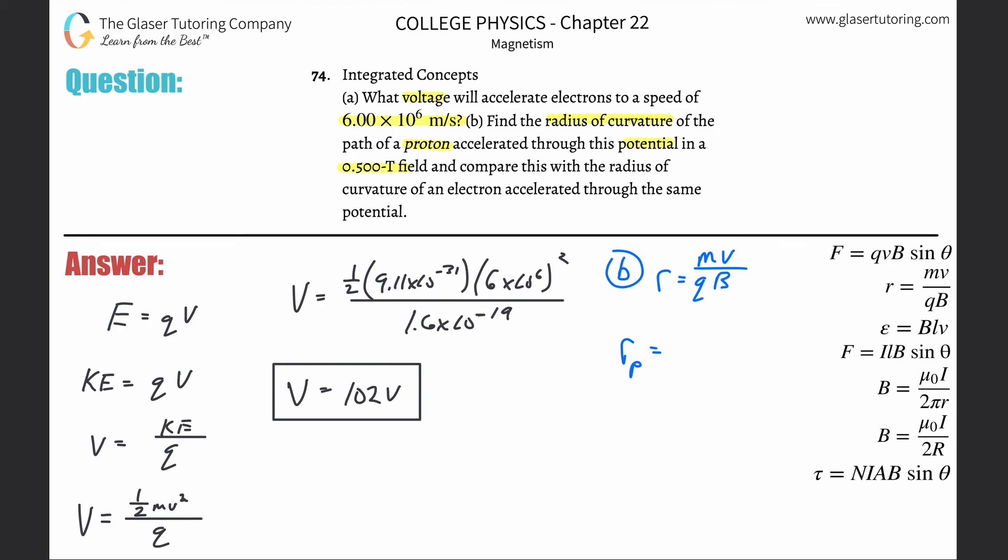Actually, they're saying compare it to that of the radius, so they don't really want us to calculate the actual values. What I'm going to do is write the mass of the proton times velocity of proton divided by the charge of the proton times the magnetic field that the proton is experiencing. We would have the same exact formula with different subscripts for the electron.